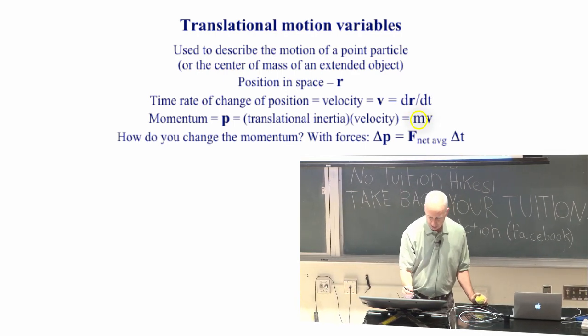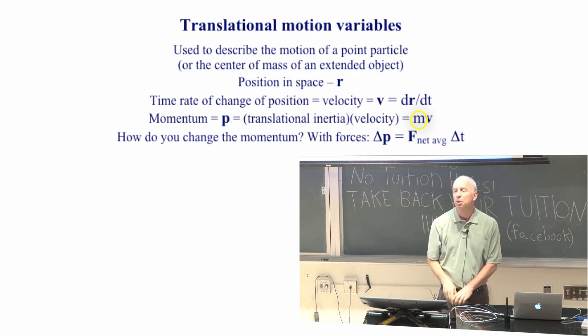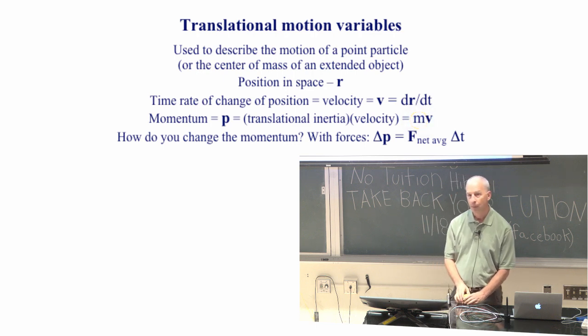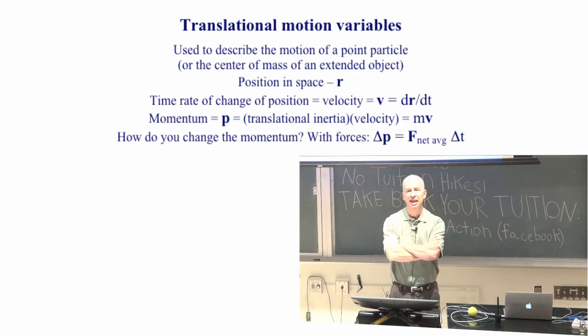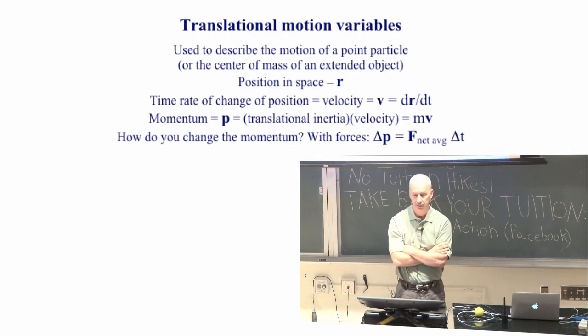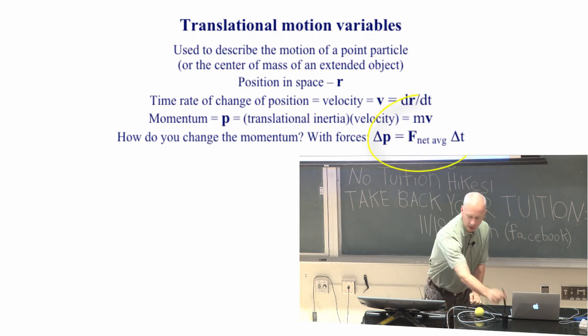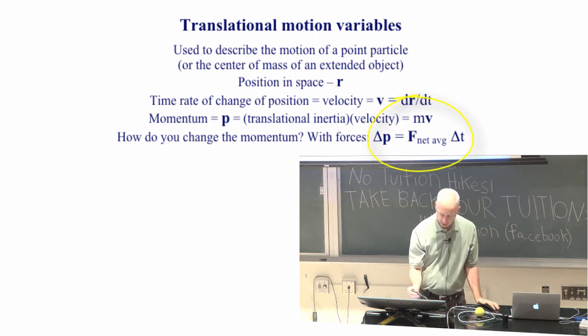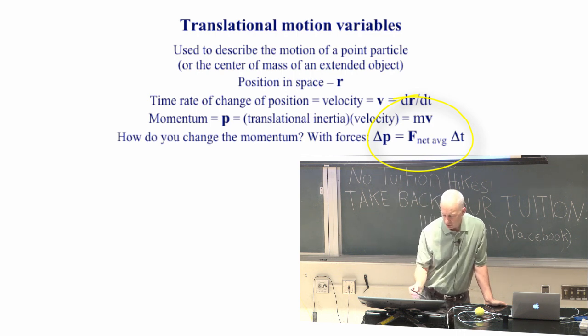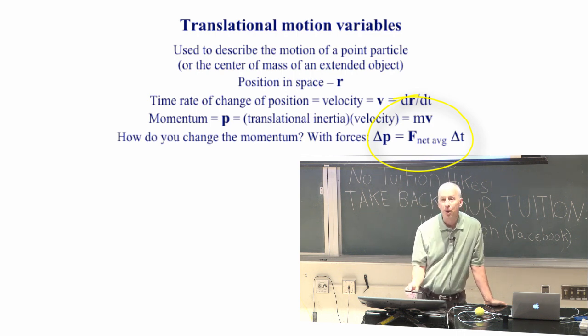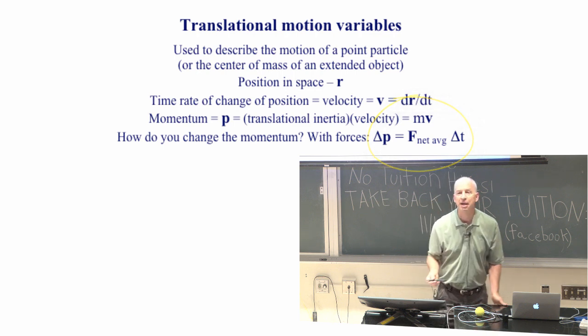The reason mass shows up here is that it tells you about the translational inertia. The mass tells you how hard it's going to be to change the motion of the thing. And that's what's represented here in Newton's second law. If I want to change the momentum, and the momentum has both mass and velocity in it, I need to apply a force from the outside, or a bunch of forces that don't cancel each other out, and I need to do that for some amount of time.